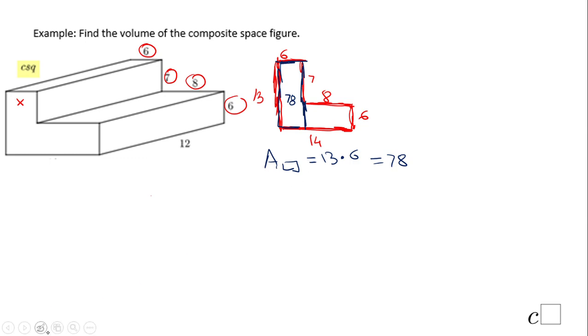We have one more, which is this rectangle right here, which is six by eight. So I'm going to do just six times eight, which is 48. The next thing for finding the area of the base is to add these two numbers: 78 and 48.